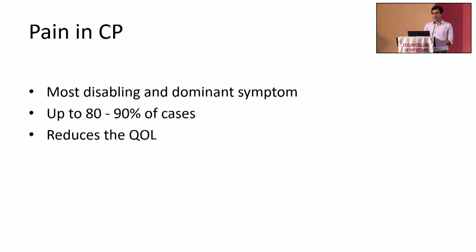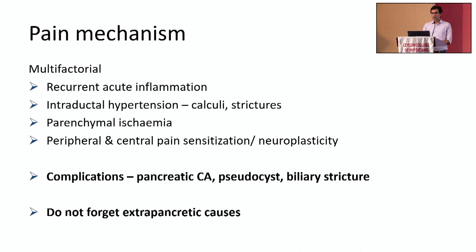Pain is the most common and most disabling symptom in chronic pancreatitis, seen in up to 80–90% of cases, and it significantly reduces quality of life. The mechanism of pain is still poorly understood but is probably multifactorial. Possible causes include recurrent episodes of acute inflammation, intraductal hypertension due to calculi or duct strictures, parenchymal ischemia, and persistent stimulation of pancreatic nerves due to neuroplasticity or sensitization at peripheral and central nerve levels.